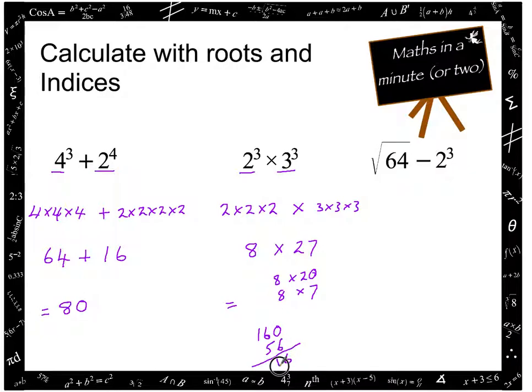6 add 5 is 11. Carry the 1. 1 add 1 is 2. So the whole answer is 216.